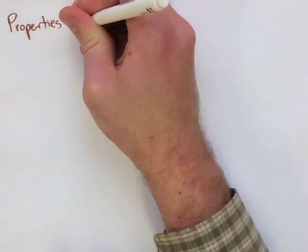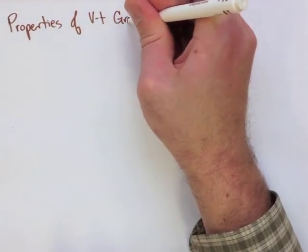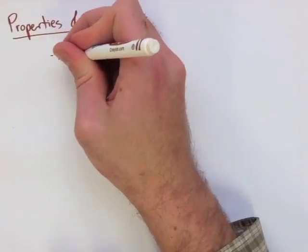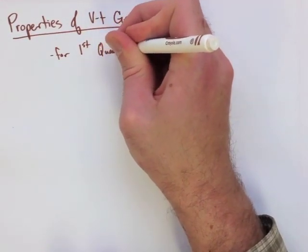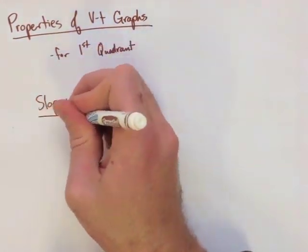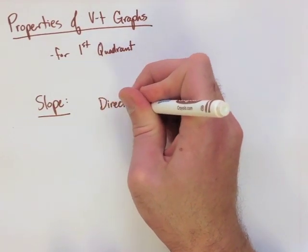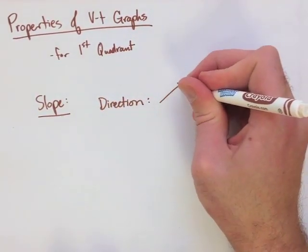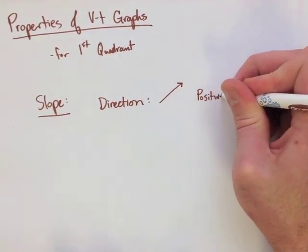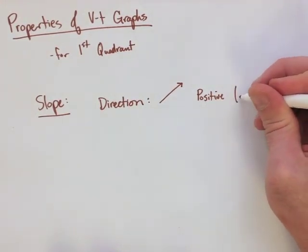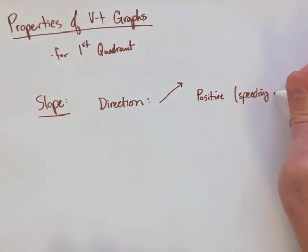Just like we did with a displacement time graph, we're going to look at some properties for a velocity time graph, mainly the slope, and we're going to focus on the first quadrant. Now when we're talking about the slope, we look at two things: the direction and how steep it is. If the direction is positive, that means we have some acceleration and that we're speeding up. The acceleration in this case is going to be positive acceleration.